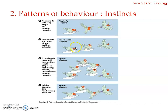So the African peach-faced lovebird carries nesting material by tucking it in its feathers — this is its peculiar feature. Fischer's lovebird takes material in the beak only, while the African peach-faced lovebird tucks the nesting material in the feathers and then transports it. But when these two species were mated, the hybrid lovebird offspring showed a very peculiar habit.